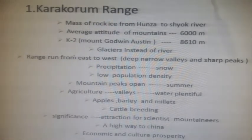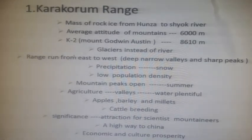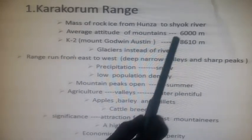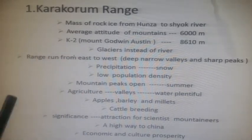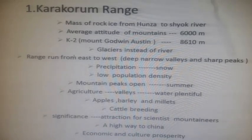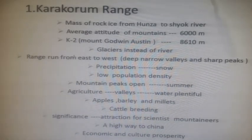Beginning with the Karakoram range: 'Karakoram' actually means 'black gravel,' and a range is a series of mountains. This range runs from east to west, from Hunza to the Shiok River. The average altitude is 6000 meters. K2, also known as Mount Godwin-Austen, is situated in this range at a height of 8610 meters — remember its height and location as they come in exams. Precipitation here is mostly in the form of snow due to the altitude.